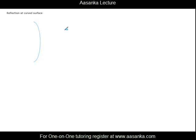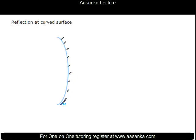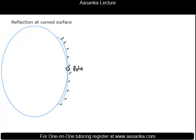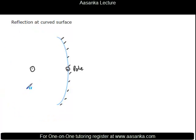Now, there are certain terms we use when referring to reflection at curved surfaces. Suppose this is a concave mirror with silvering on the right side. The geometric center of this mirror is called the pole. The center of curvature is the center of the circle which actually contains this mirror, denoted C.